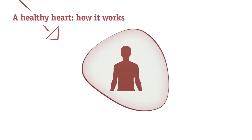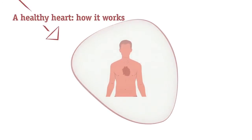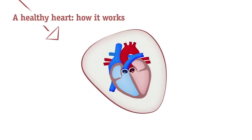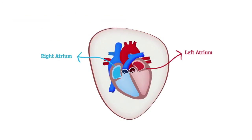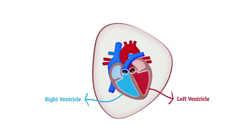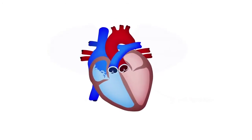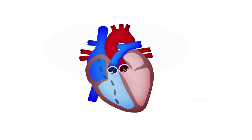The heart is a muscle that pumps blood and oxygen to all parts of the body. It has four chambers, two at the top and two at the bottom. The right side of the heart receives blood that is low on oxygen.